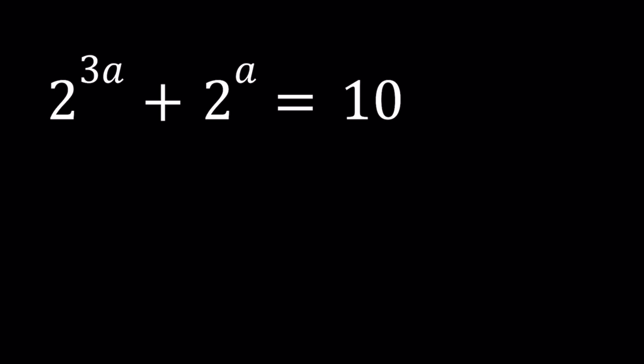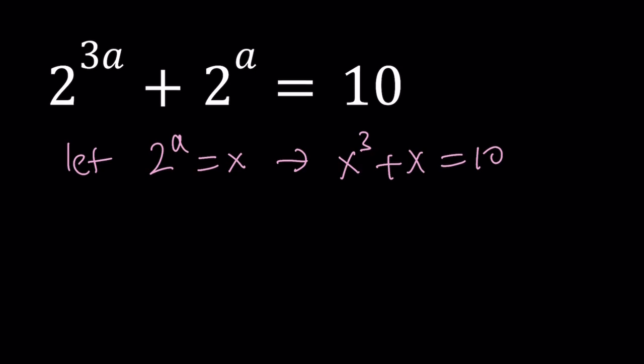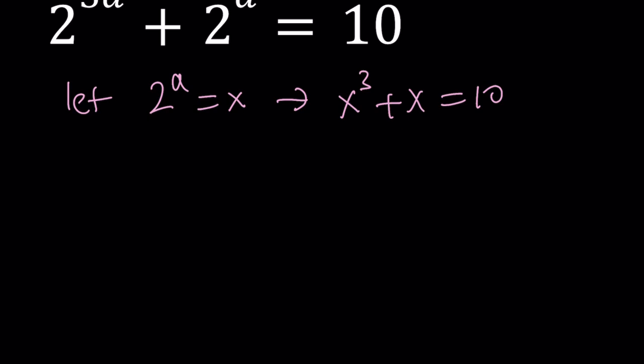So we have 2 to the power 3a plus 2 to the power a equals 10. Let 2 to the power a equal x. Then we get the following equation: x cubed plus x equals 10. And I know what you're thinking. Guess and check, you got it in 10 seconds, 5 seconds, whatever. We're not racing, it's okay.